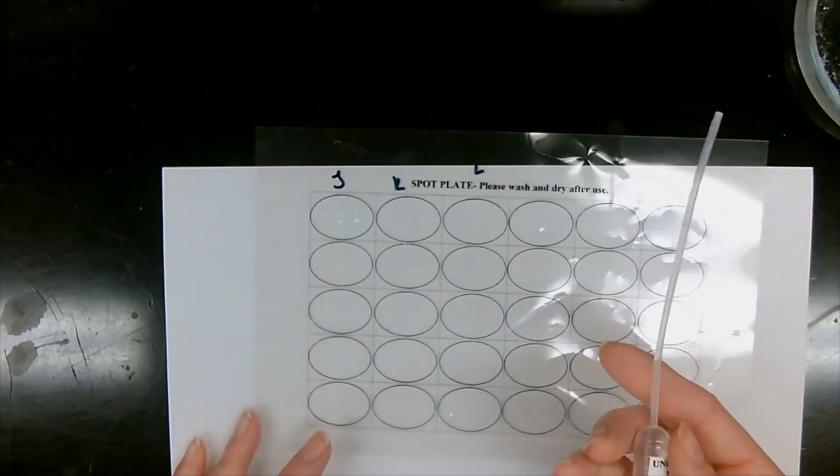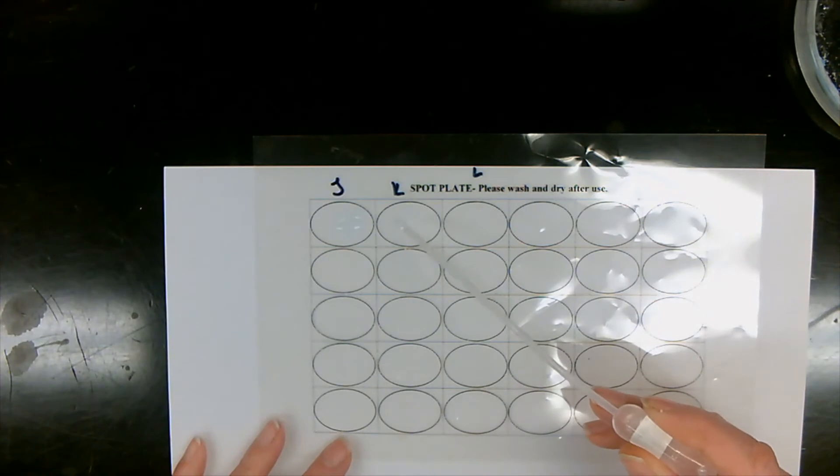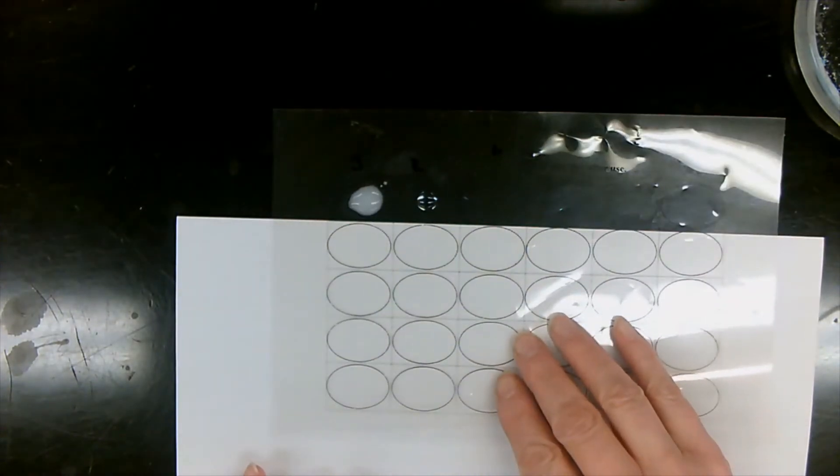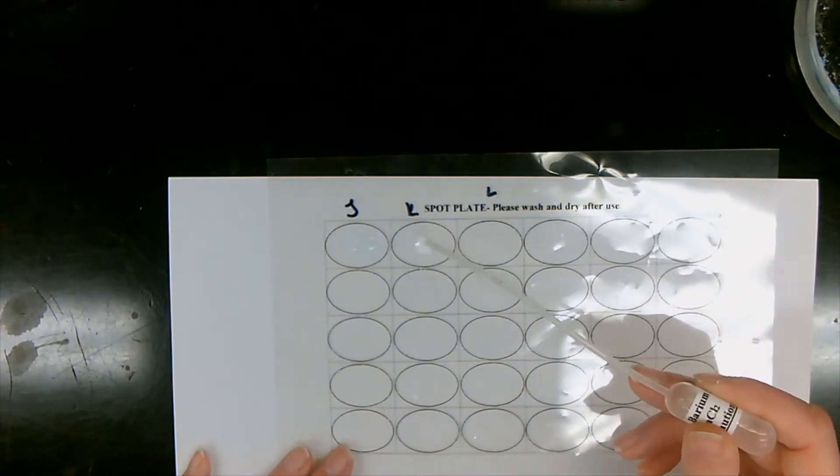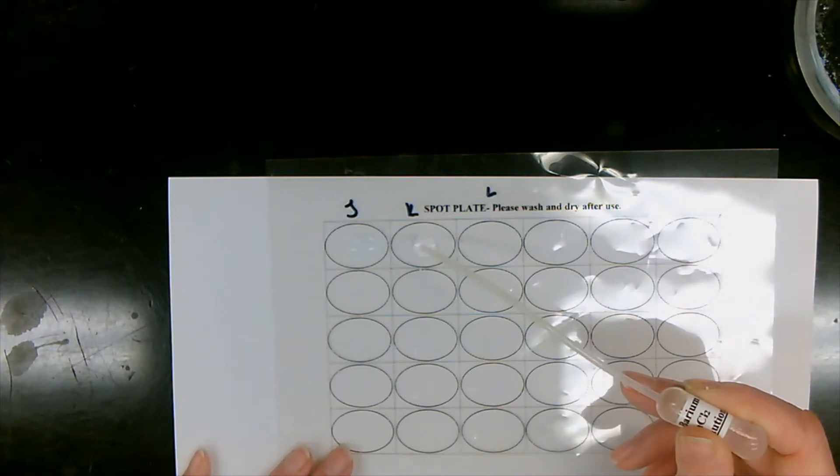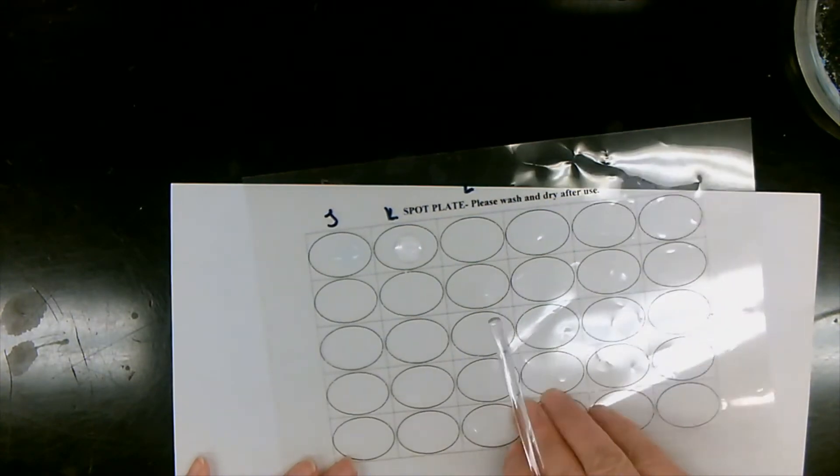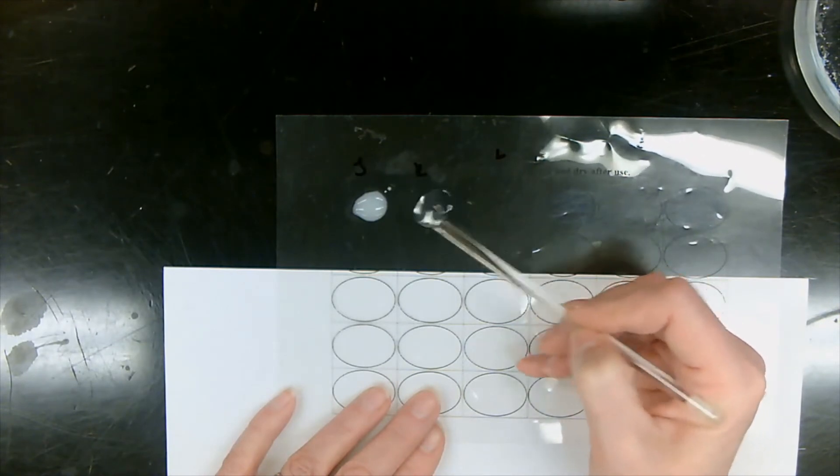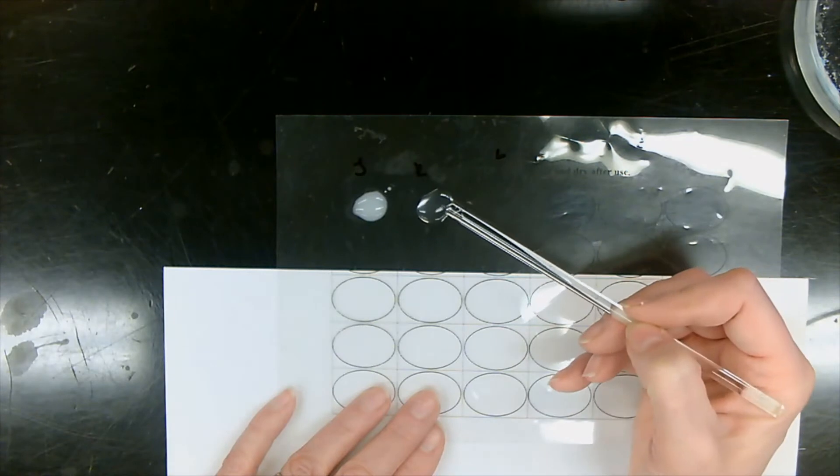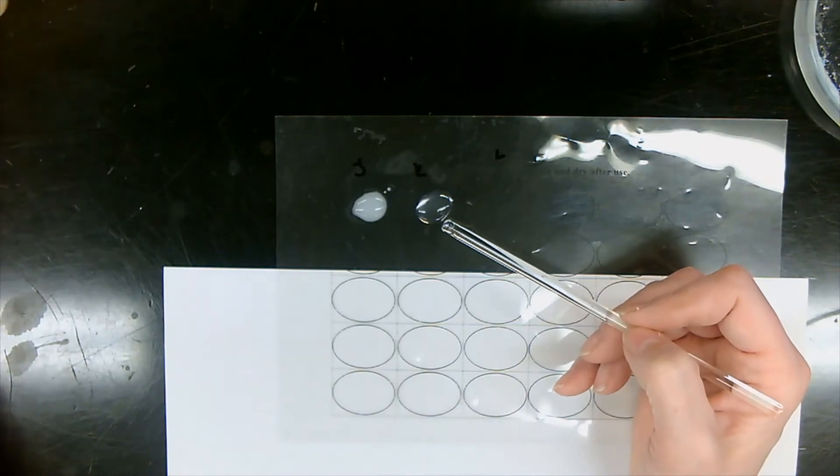And now let's move on to K. Unknown salt K. Three drops of K. So we can see it's clear. Adding our barium chloride. Three drops. Black background. Still stays clear, no change, no precipitate.